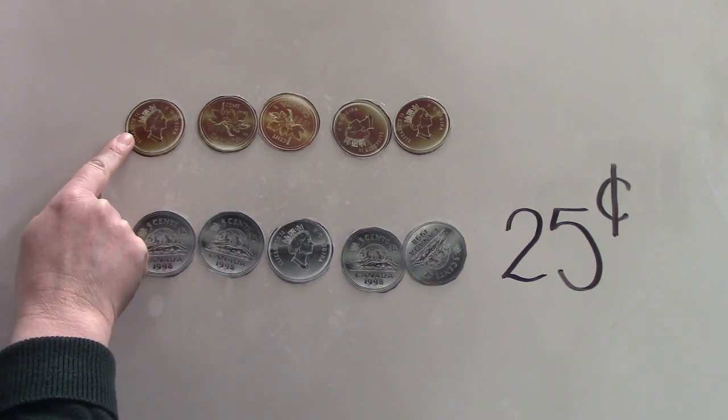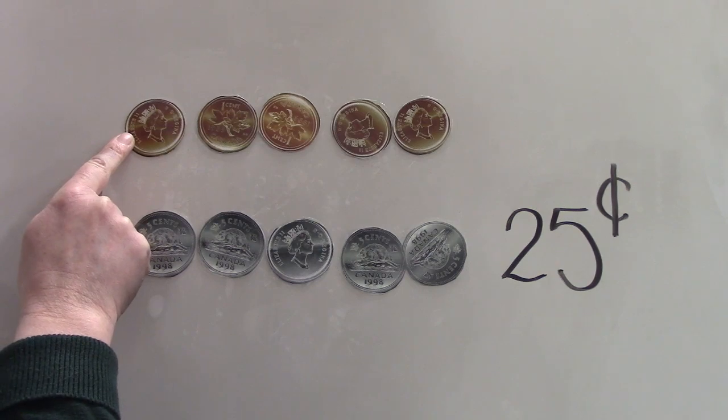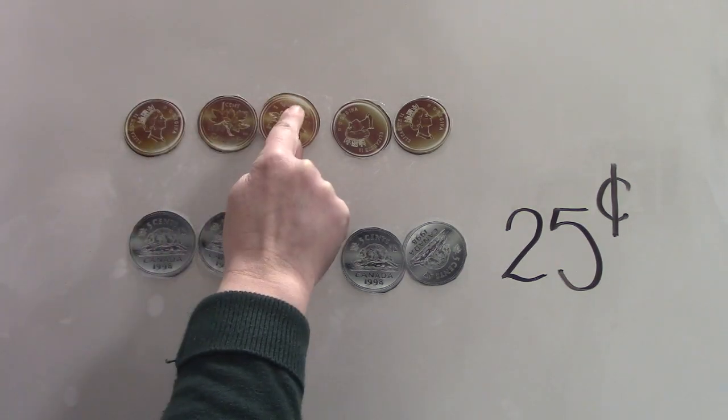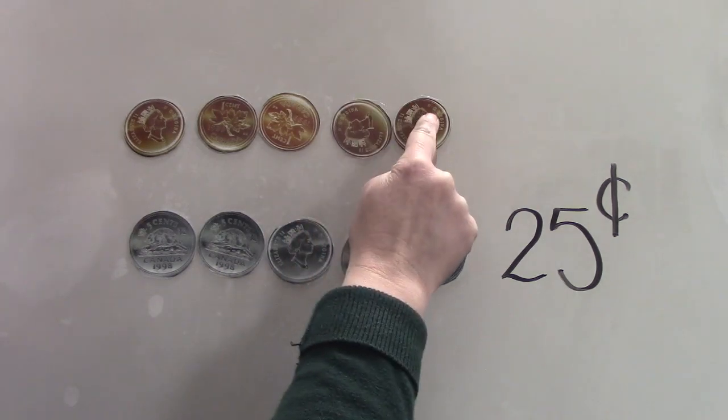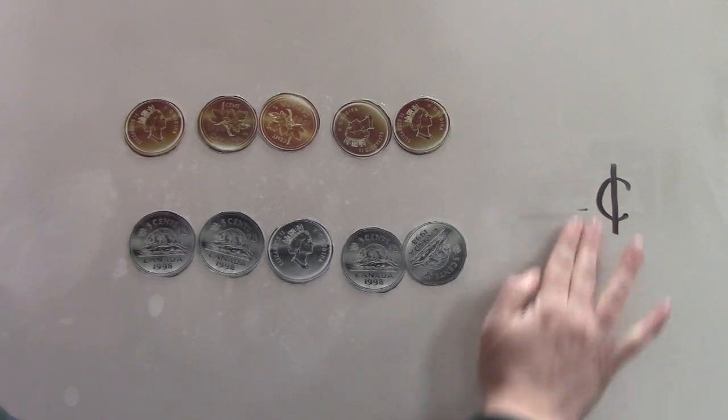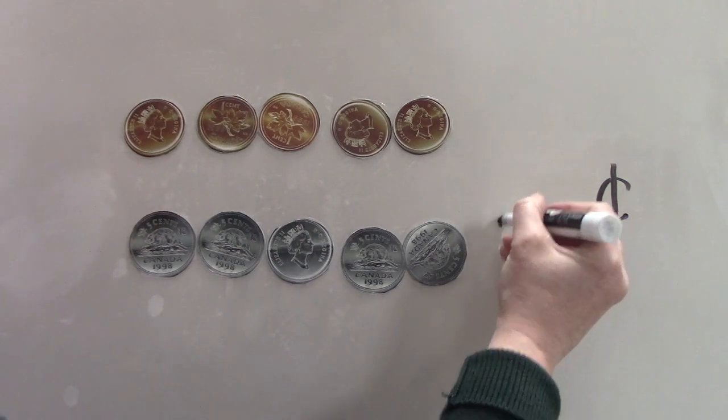When we come up here, we can't count by five anymore because these are pennies. So we're going to add to 25. 26, 27, 28, 29, 30. So all together, we have 30 cents.